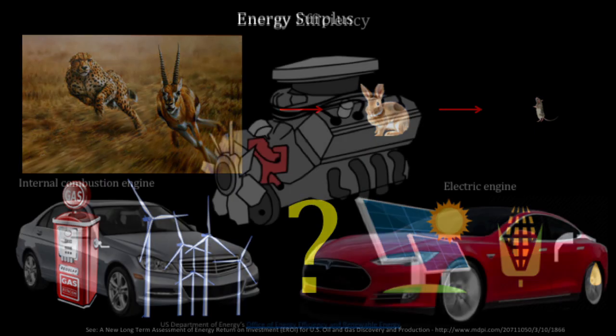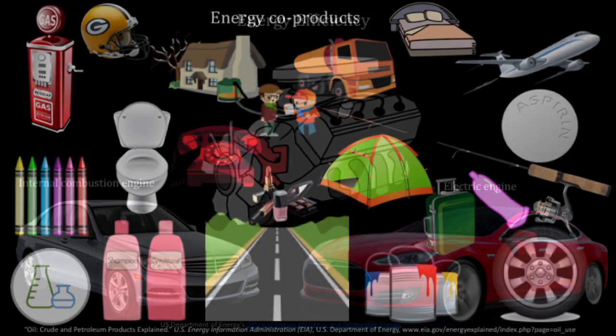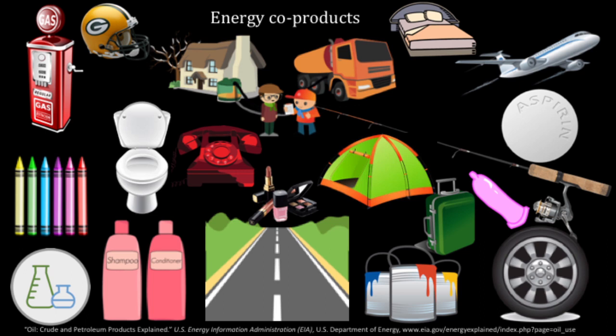Corn ethanol has a very tiny energy surplus relative to gasoline and oil. Energy efficiency is also a very important energy property. Conventional gasoline-powered vehicles only convert around 20 percent of the energy stored in the gasoline to power at the wheels. Electric engines, however, are far more efficient — they convert 60 percent of the electrical energy from the grid to power at the wheels.